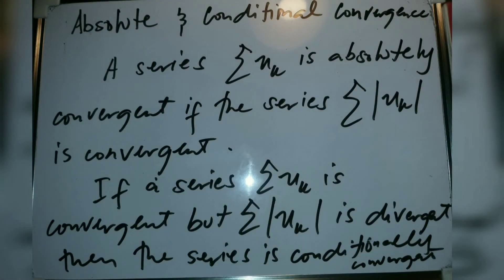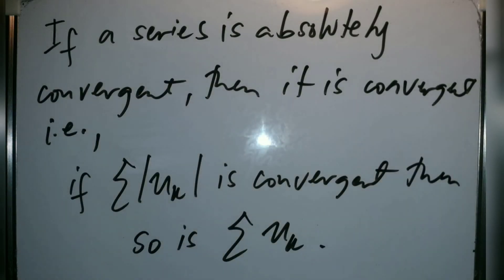We go to absolute and conditional convergence. A series is absolutely convergent if the series summation of |u_k| is convergent. If a series summation u_k is convergent but summation of |u_k| is divergent, the series is conditionally convergent. If a series is absolutely convergent, then it is convergent.